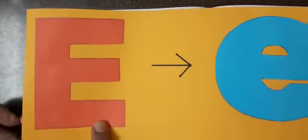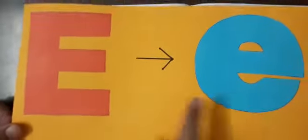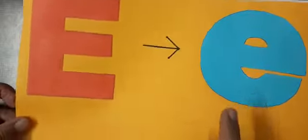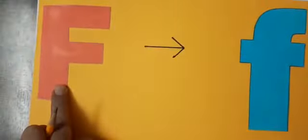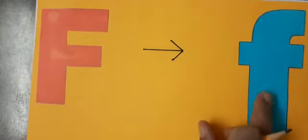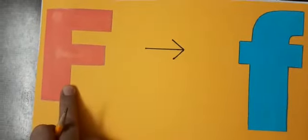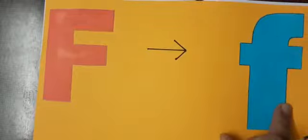This is letter E and A. E says A. And this is F and F says F. This is letter F and the sound of letter F is F.